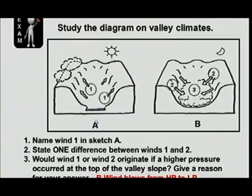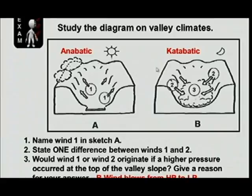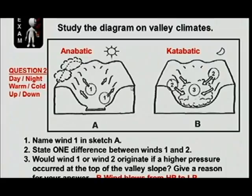Name the wind one in sketch A. Remember, it can only be one of two — the katabatic or the anabatic. We've got the anabatic during the day and the katabatic during the night. The second question: state one difference between winds one and two. First difference: wind one occurs during the day and wind two occurs during the night.